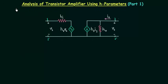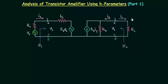In the last presentation we obtained the hybrid equivalent circuit and now we will find the expressions for current gain, voltage gain and power gain. In this circuit on the input side I will introduce the source voltage Vs and the resistance Rs. On the output side I will introduce the load resistance RL. Current IL is the current through the load resistance, Z subscript O is the output impedance, Z subscript I is the input impedance, and first we will find the expression for current gain.